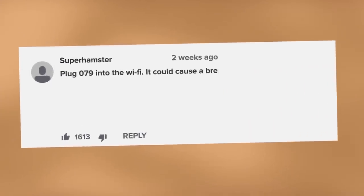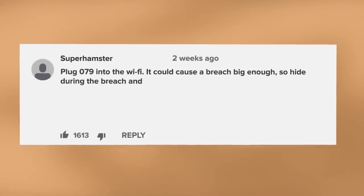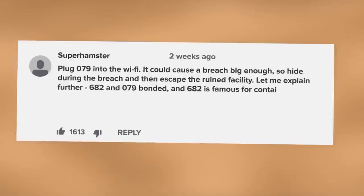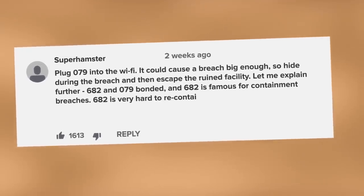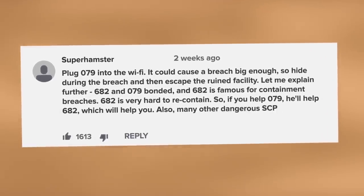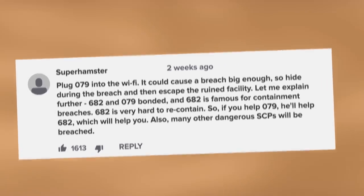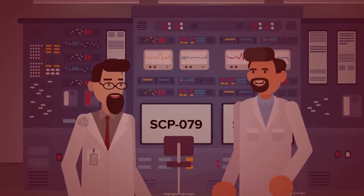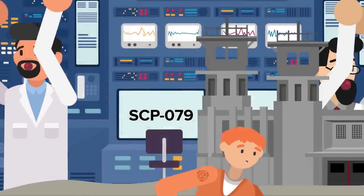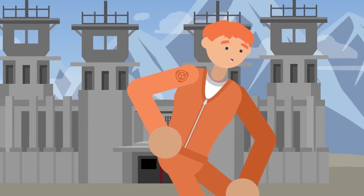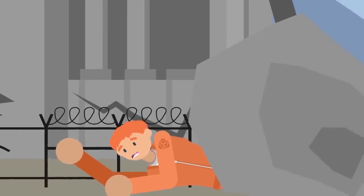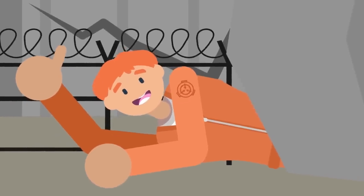Superhamster said, 'Plug 079 into the Wi-Fi. It could cause a breach big enough, so hide during the breach and then escape the ruined facility. Let me explain further. 682 and 079 bonded, and 682 is famous for containment breaches. 682 is very hard to recontain, so if you help 079, he'll help 682, which will help you. Also, many other dangerous SCPs will be breached.' Now this is thinking big. Sure, you'll be exposing the entirety of the World Wide Web to an aggressive, unpredictable, and downright rude artificial intelligence, but you'll probably be able to escape back into the world. Who knows how much of the world will actually be left after you've unleashed 079, 682, and a whole host of other dangerous anomalies, but the remaining rubble will be your oyster.